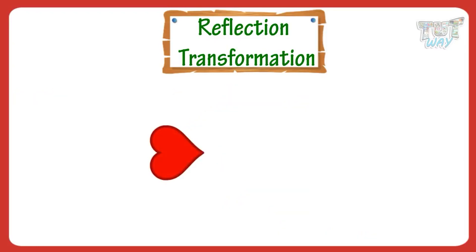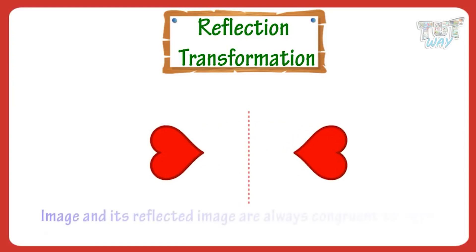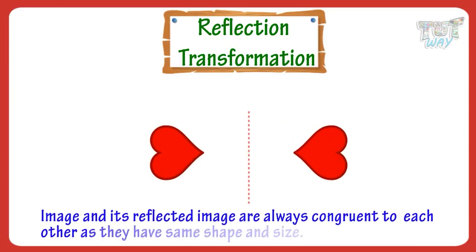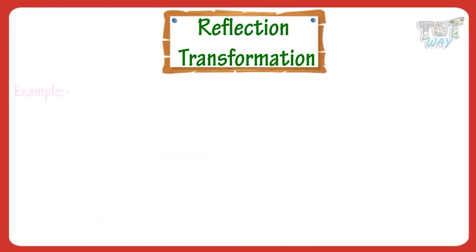A figure and its reflected image are always congruent to each other. That is, they have the same shape as well as the same size, but face in opposite directions. Here are examples.